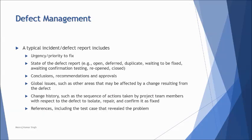The report also includes: severity, priority, and the current state of the defect report. Once resolved, conclusions, recommendations, and approvals are added. Global issues mention regression testing to be conducted after resolution, since changes may adversely affect unchanged parts of the system. A change history tracks version control updates to the defect report, and references include the test cases that revealed the problem, which can also serve as a defect taxonomy for future test case preparation.